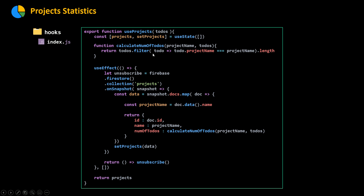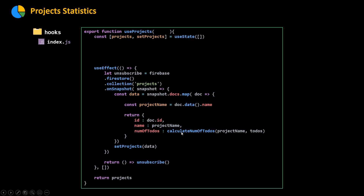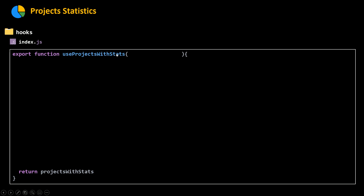Let's update the useProjects hook — I'm going to get rid of the calculateTodos function, remove the numberOfTodos property, and remove the to-dos parameter. Now useProjects will return an array called projects where each element is an object with two properties: an ID and the name of the project. Now let's go and create our useProjectsWithStats custom hook inside index.js as an exported function.